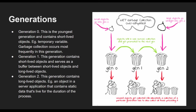Coming to generation 1. This generation contains short-lived objects and serves as a buffer between short-lived objects and long-lived objects. After the garbage collector performs a collection of generation 0, it compacts the memory for the reachable objects and promotes them to generation 1. Because objects that survive collections tend to have longer lifetimes, it makes sense to promote them to a higher generation. The garbage collector doesn't have to re-examine the objects in generation 1 and 2 each time it performs a collection of generation 0. If a collection of generation 0 does not reclaim enough memory, the garbage collector can perform a collection of generation 1, then generation 2. Objects in generation 1 that survive collections are promoted to generation 2.